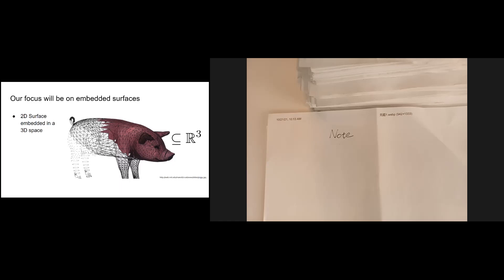There are two keywords. The first is 'surfaces,' which means that intrinsically it will be 2D. The second keyword is 'embedded,' which means that the surface is located embedded in 3D space. This gives us the luxury to use the coordinates in the 3D space and also the inner products defined in it, which allows us to do analysis and define interesting things.